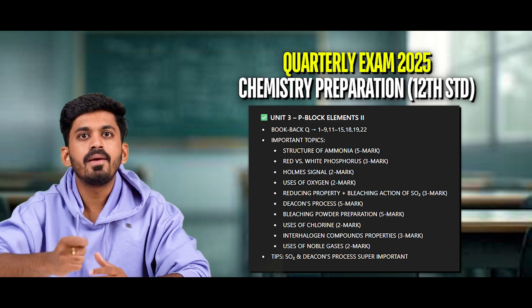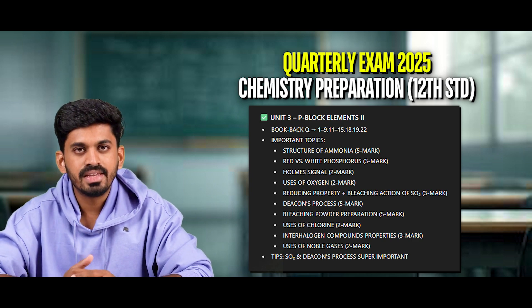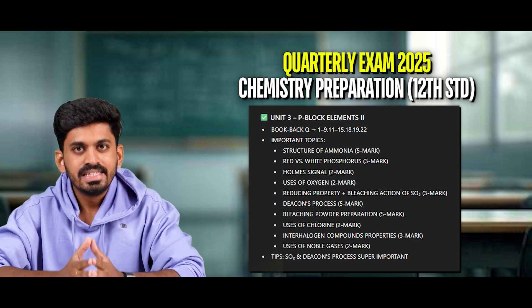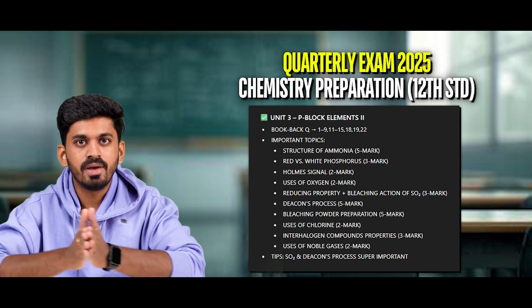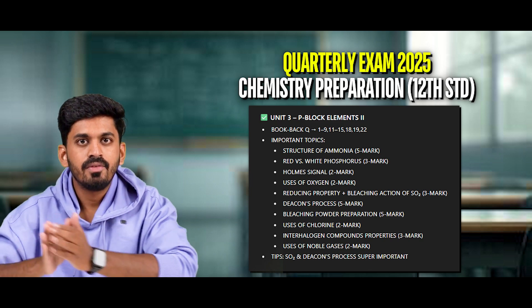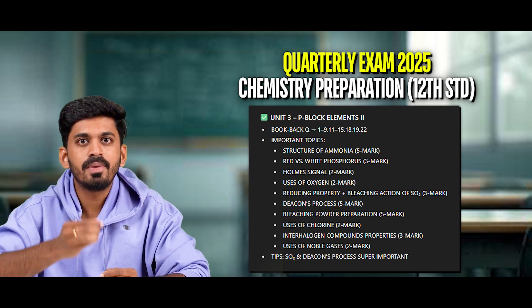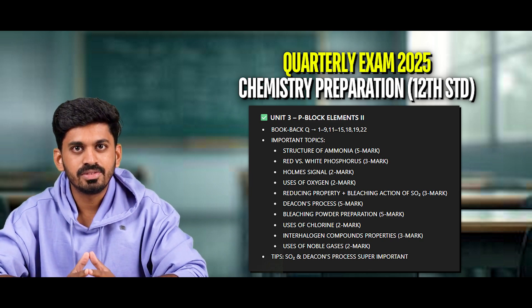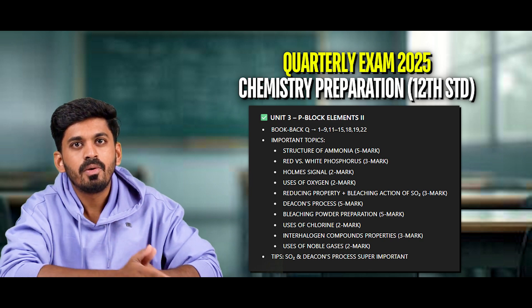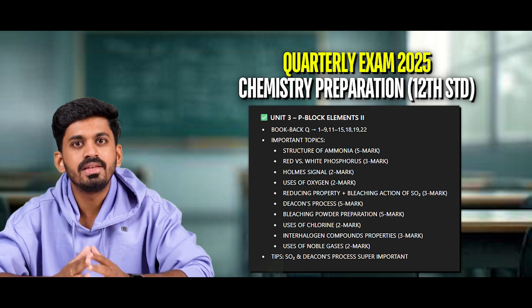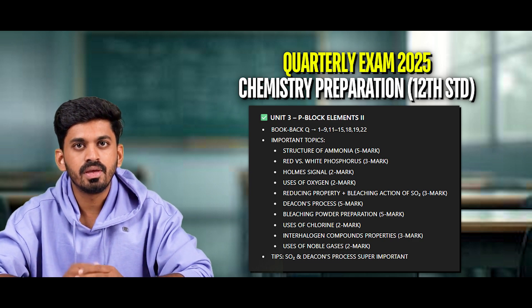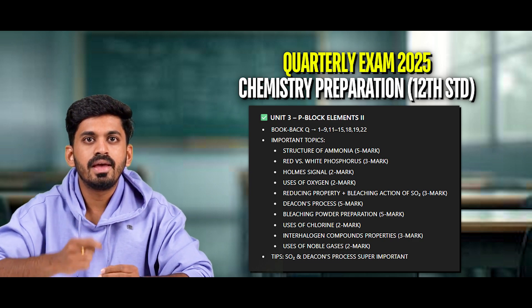Book-back questions continued: 9, 11, 12, 13, 14, 15, 18, 19, 22. Now let's go to the book. Structure of ammonia — this is 5 marks. This is 3 marks — this is the home signal.